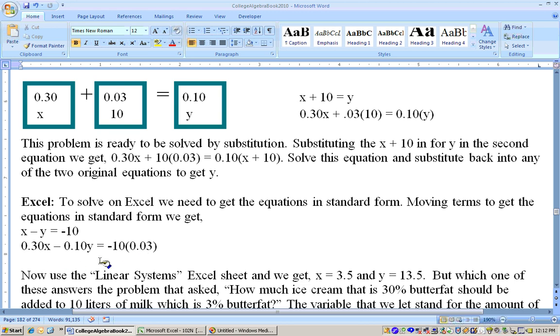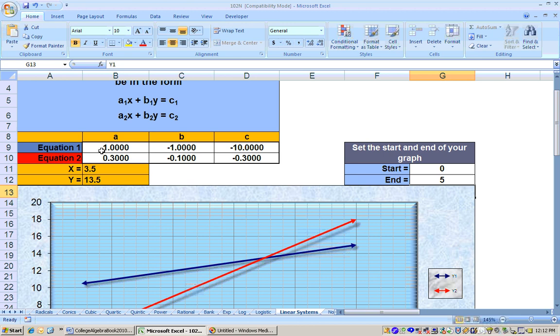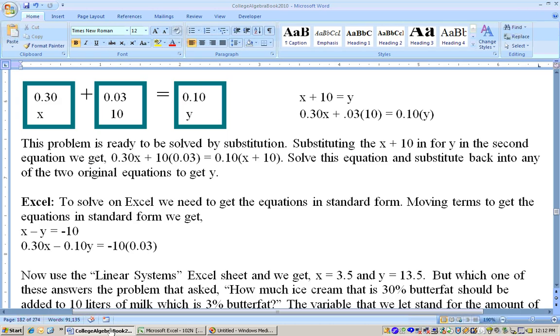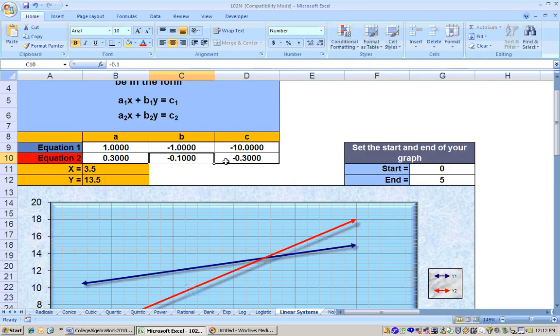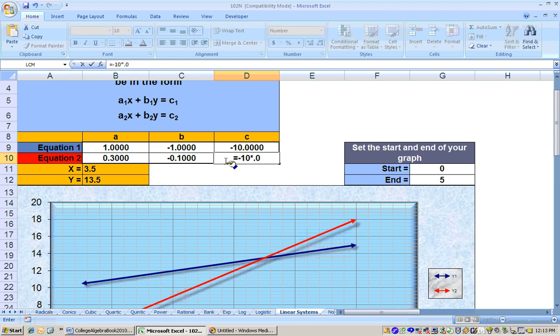Once you get the system of equations, then you can go ahead and go to Excel and type in your coefficients. My coefficients for my first equation were 1, negative 1, negative 10. In my second equation, they were 0.3. Then right here, it was actually negative 0.1. And I'll show you that there, negative 0.1. And then the coefficient or the constant at the end was negative 10 times 0.03. And I actually typed in equals negative 10 times 0.03. And that tells me how much butterfat he needs to end up with there. And here is your final answer right here.